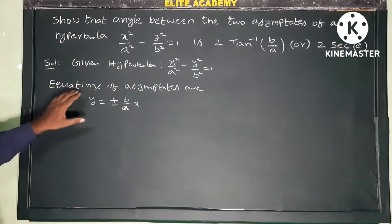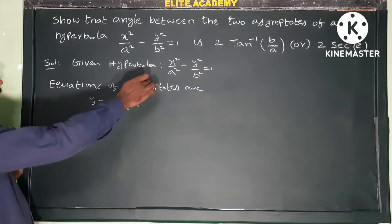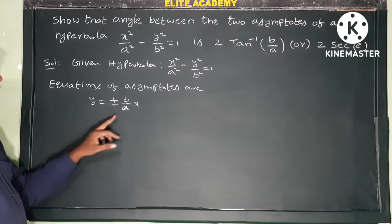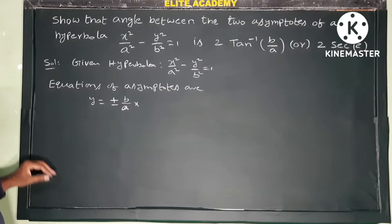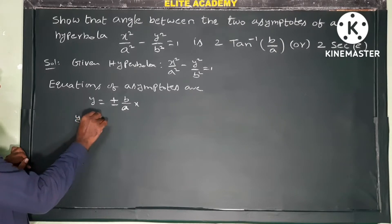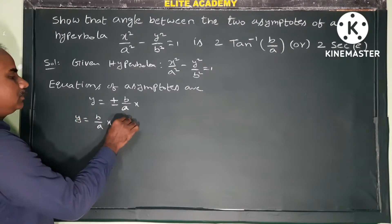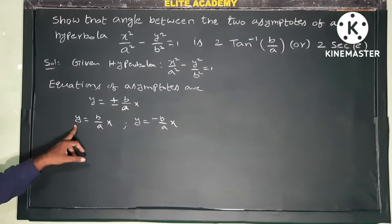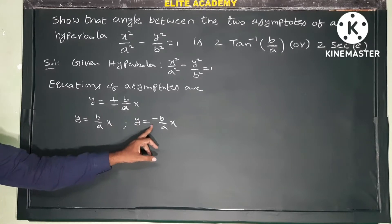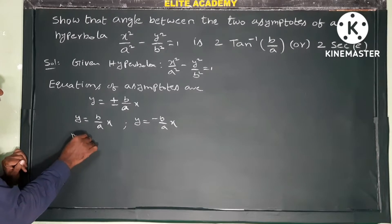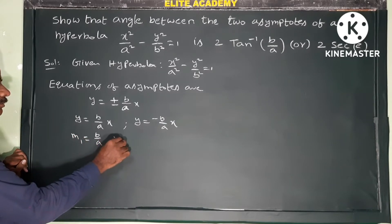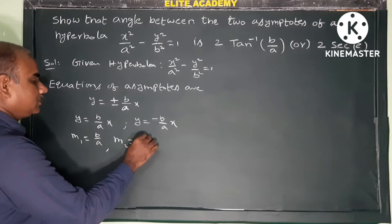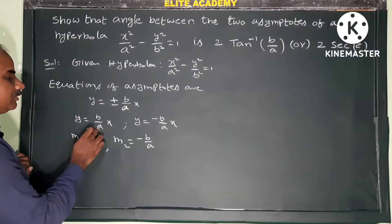First of all, given the hyperbola, the equations of asymptotes are y = ±(b/a)x. So two lines are involved: y = (b/a)x and y = -(b/a)x. Both are in the form y = mx. So slopes: m1 is equal to b/a — m1 is the slope of the first asymptote, m2 is the slope of the second asymptote, so m2 = -b/a.